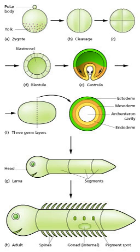Organoids have also been demonstrated as an efficient model for development. Plant development has focused on the thale cress Arabidopsis thaliana as a model organism.